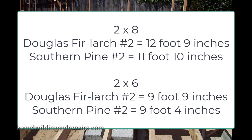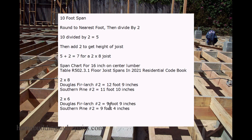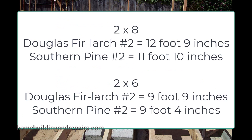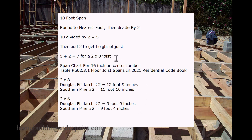I'd also like to point out that these lumber spans do change — you could probably use a 10-foot 2 by 6 if it were number 1 or select, but you would need to check with the span charts to verify those lengths. For Southern pine number 2, a 2 by 6 has a maximum span of 9 foot 4 inches, suggesting that this method actually works.